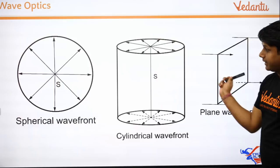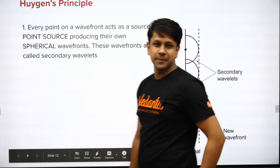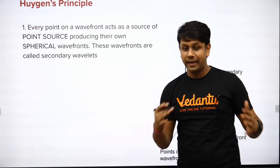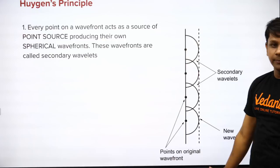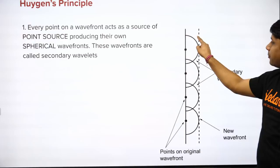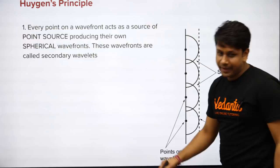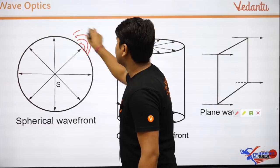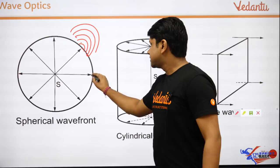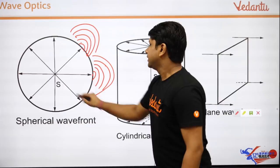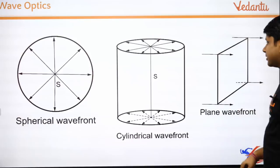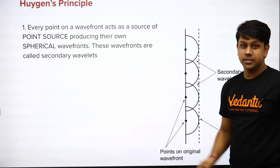Next is Huygens' Principle, which is very interesting. It states that every point on a wavefront acts as a secondary source of light, also called secondary wavelets. This means any point you pick on a wavefront will emit a secondary wavelet. Young's Double Slit Experiment is based on this very principle.